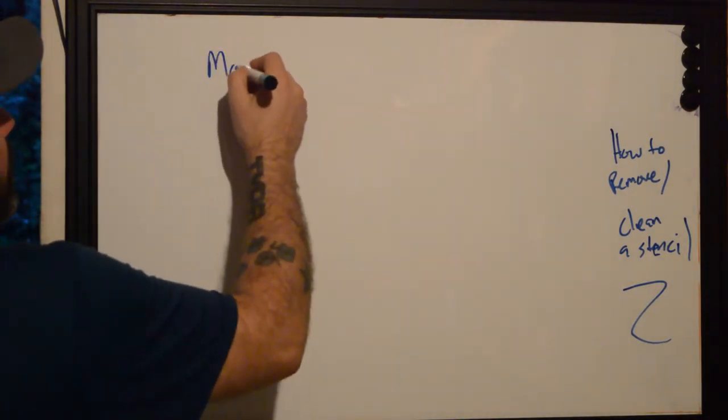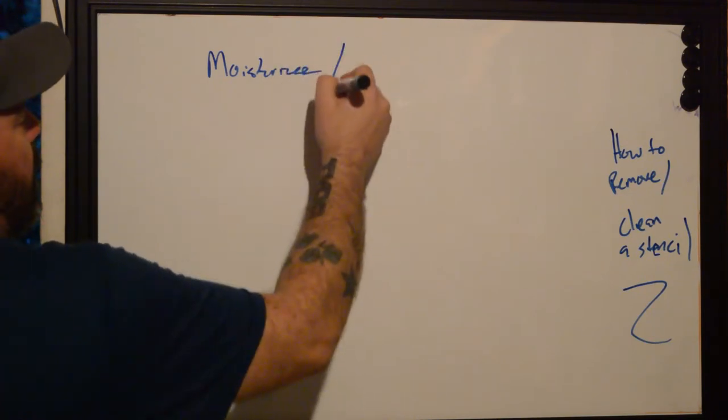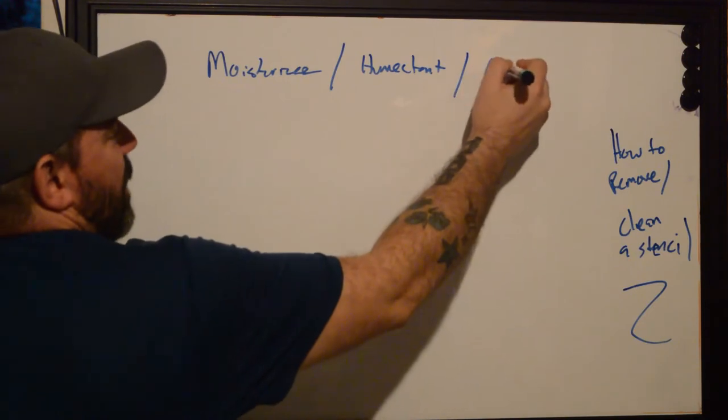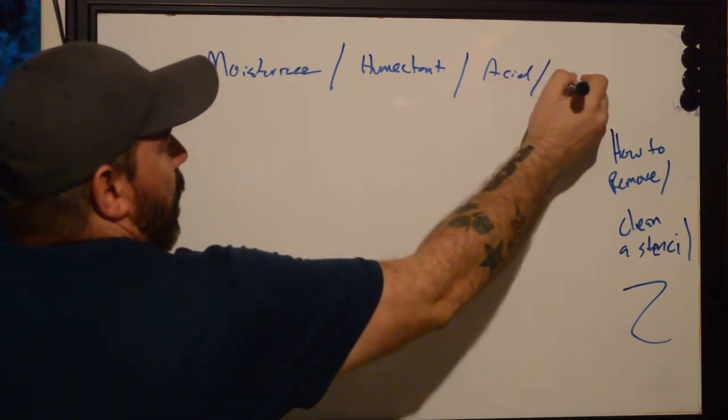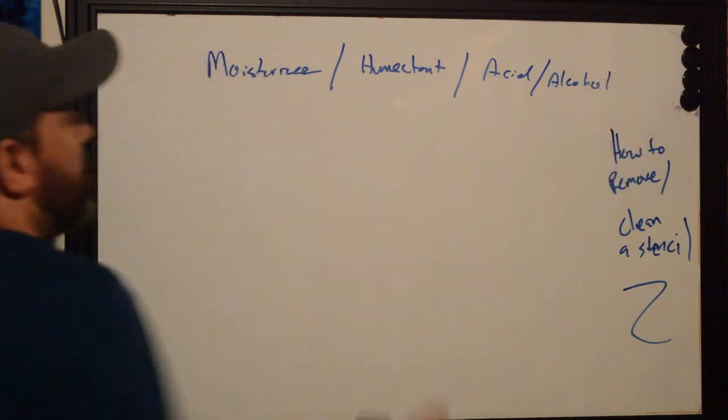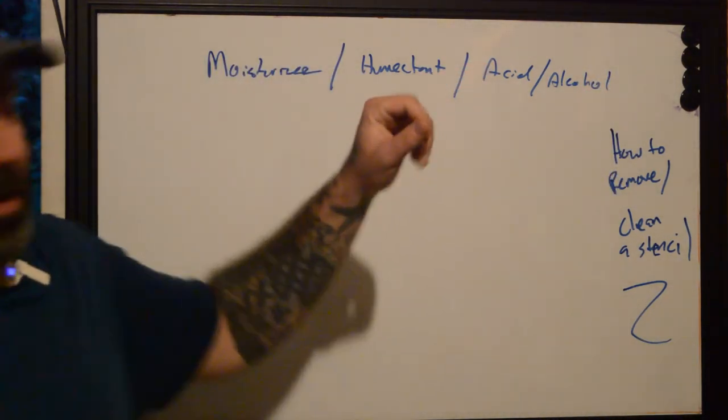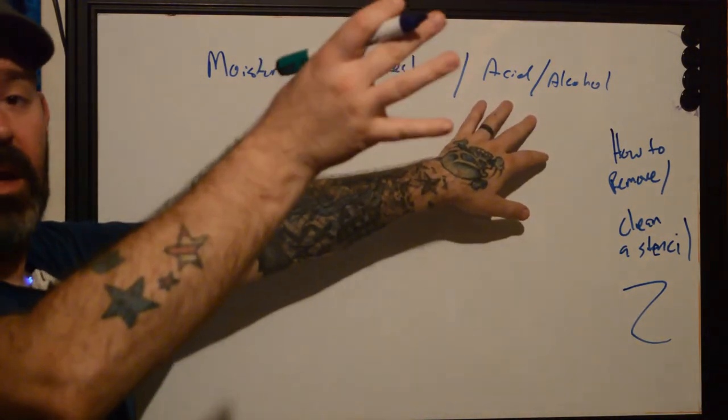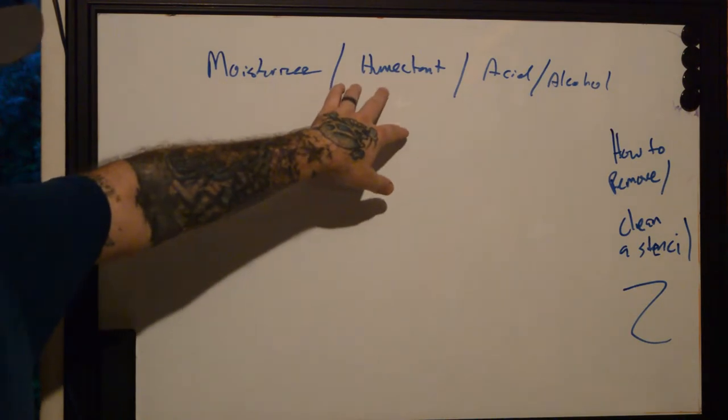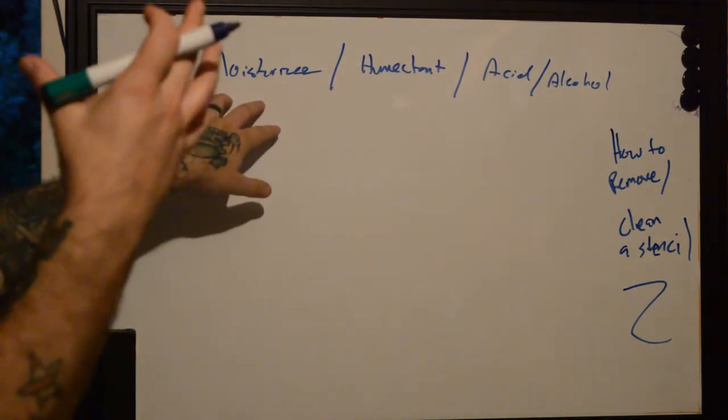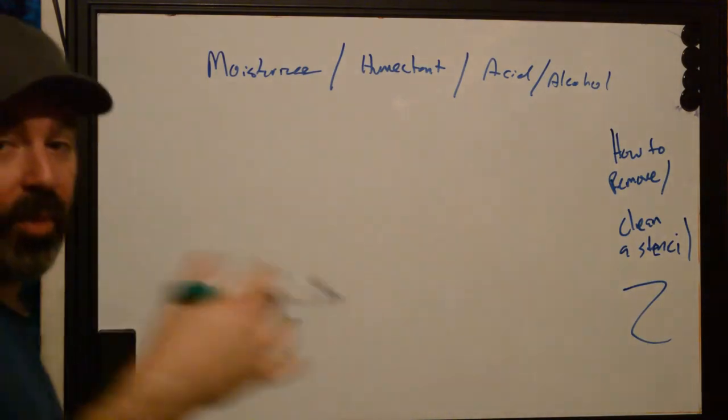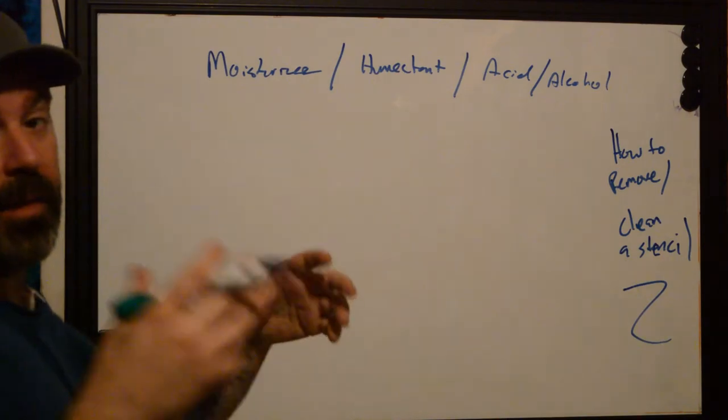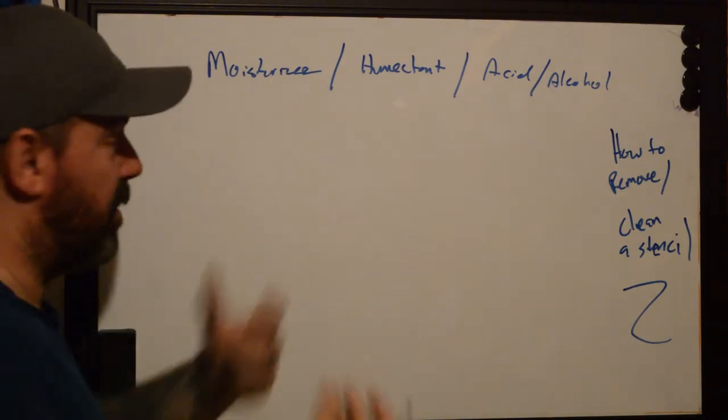We're going to have a moisturizer, a humectant, and some type of acid or alcohol, right? How these things work is we're going to have something that's going to be stripping or desiccating the skin to a point that a humectant is going to be able to pull moisture in and that moisture is going to be bound to the purple stencil ink that you see attached to the transfer papers, right?